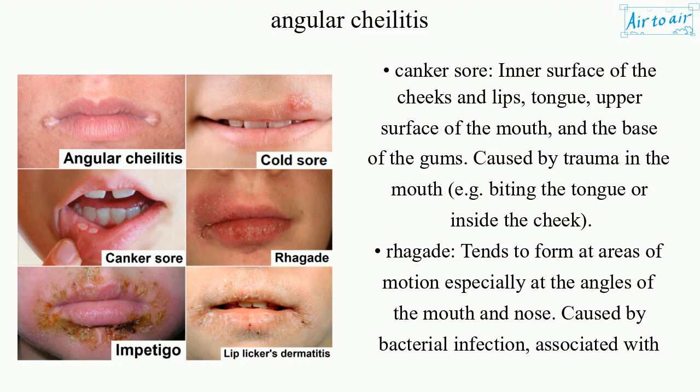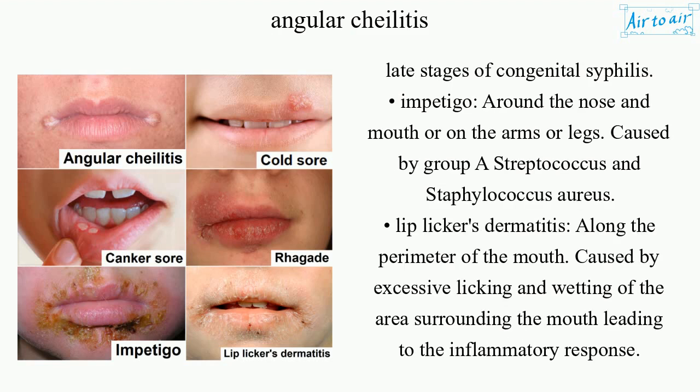Ragade: tends to form at areas of motion, especially at the angles of the mouth and nose, caused by bacterial infection associated with late stages of congenital syphilis. Impetigo: around the nose and mouth or on the arms or legs, caused by group A streptococcus and Staphylococcus aureus. Lip Lickers Dermatitis: along the perimeter of the mouth, caused by excessive licking and wetting of the area surrounding the mouth, leading to an inflammatory response.